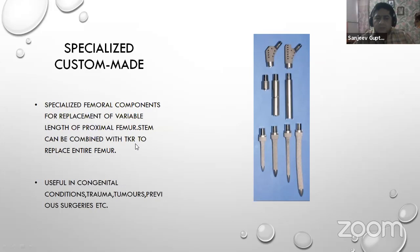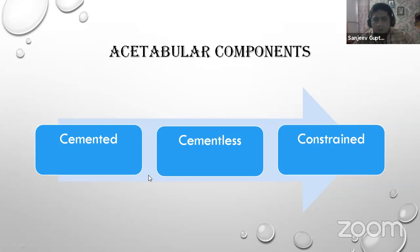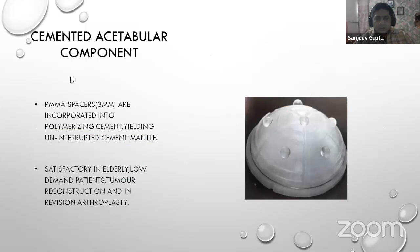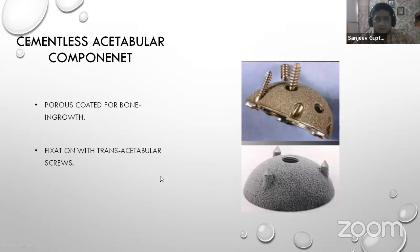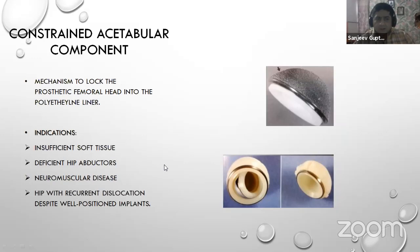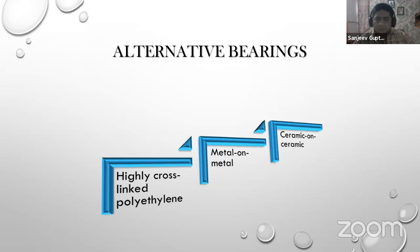Specialized custom-made stems provide femoral components for replacement of variable length of the proximal femur and can be combined with a tibia to replace the entire femur; useful in congenital conditions, trauma, tumors, and previous surgeries. Acetabular components can be cemented, cementless, or constrained. Cemented acetabular components have a 3mm PMMA spacer yielding uninterrupted cement mantle, satisfactory in elderly low-demand patients and revision arthroplasty. Cementless acetabular components have a porous coat for bone ingrowth and fixation with trans-acetabular screws. Constrained acetabular components lock the prosthetic femoral head into the polyethylene liner, indicated for insufficient soft tissues, deficient hip abductors, neuromuscular disease, and recurrent dislocation despite well-positioned implants.